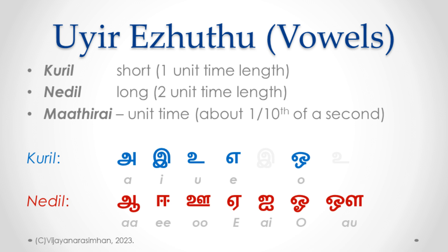Whatever your speaking pace, you should be able to differentiate Kuril and Nedal — short and long. Whatever your natural time length for 'a', the Kuril sound should be doubled for 'aa'. That difference must be maintained. This is very important because it changes the meaning of words. As long as you maintain that distinction, the exact time length doesn't matter.